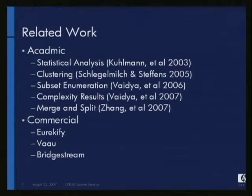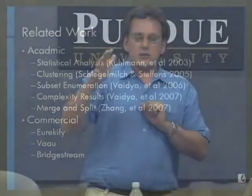He looked at all the permissions that people had, and basically each user has their own set of permissions. Those permission sets can be framed as a lattice, and then you do counts over the number of users who have each set of permissions in the lattice, and then you do a covering over that lattice to figure out what the appropriate set of roles might be that would be representative in the lattice.